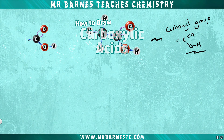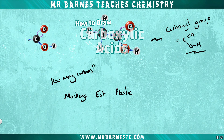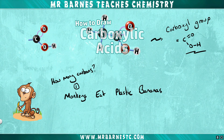If you're asked to draw the structure of a carboxylic acid, you first need to know how many carbons you need to draw. To do that, remember: monkeys eat plastic bananas, which tells you the order of the first four carboxylic acids.